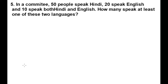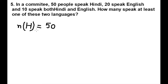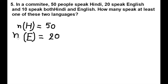So 50 people speak Hindi. Let's suppose H is a set, and the number of elements in set H is equal to 50. And 20 people speak English — let's suppose E is a set, and the number of elements in set E is 20. So this is the set of English speaking people.